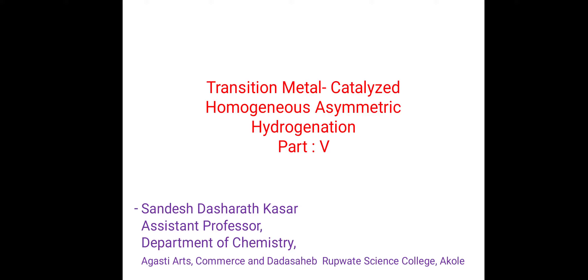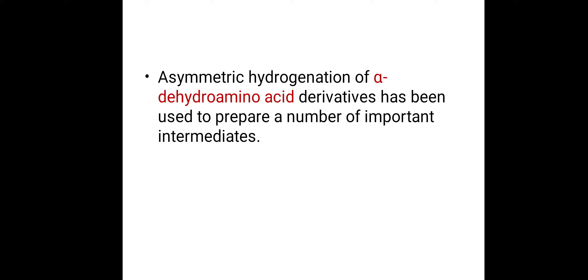Welcome to part 5 of Transition Metal Catalyzed Homogeneous Asymmetric Hydrogenation. Asymmetric hydrogenation of alpha-dehydroaminoacid derivatives has been used to prepare a number of important intermediates. The compounds alpha-dehydroaminoacids undergo asymmetric hydrogenation to give an alpha-aminoacid, which acts as an intermediate and undergoes further reactions to give an important product.